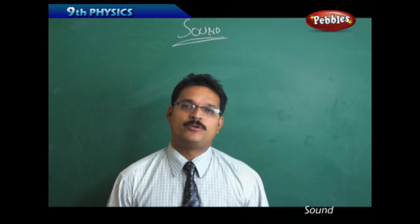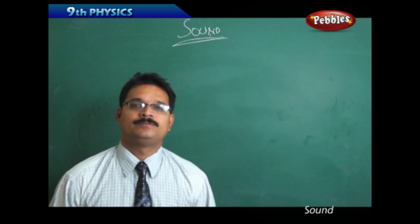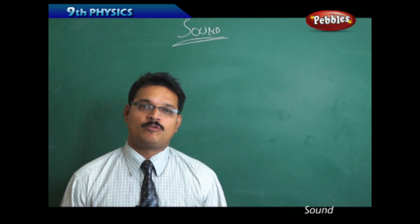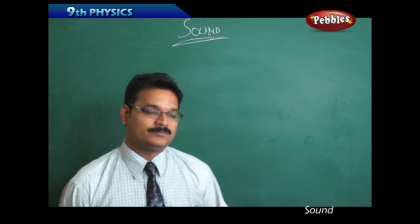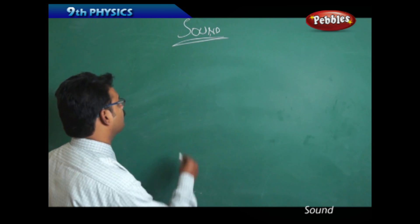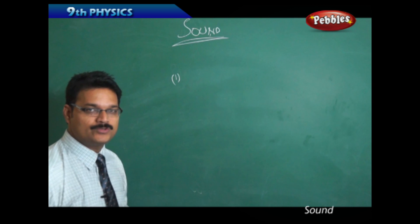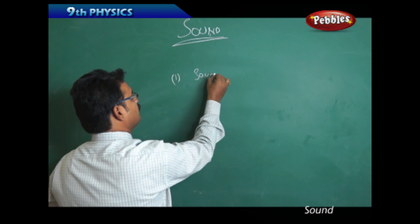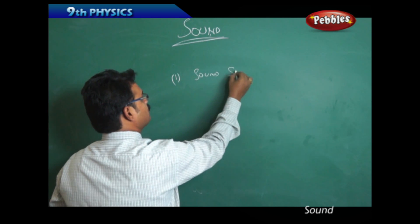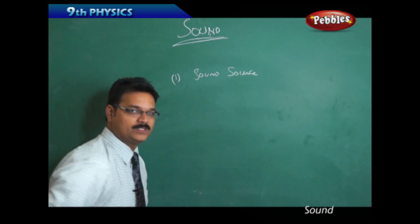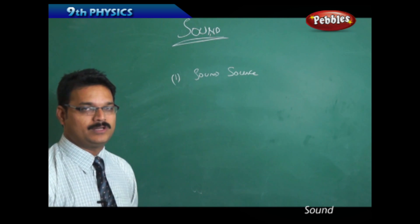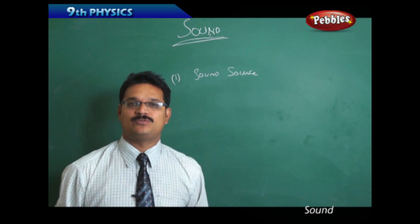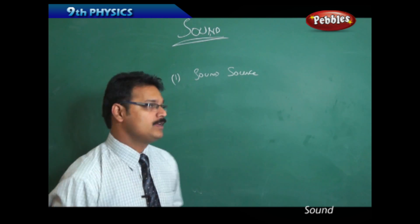To produce sound, what are the different requirements? Number one, you should have a sound source. For example, I am the sound source — I am speaking in front of you, so I am the sound source.